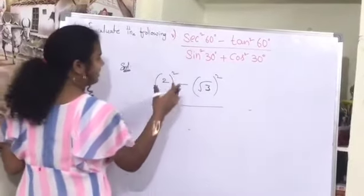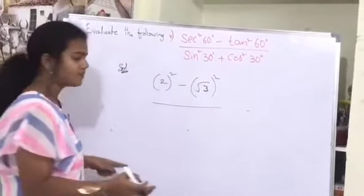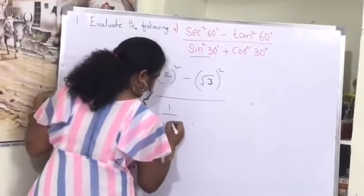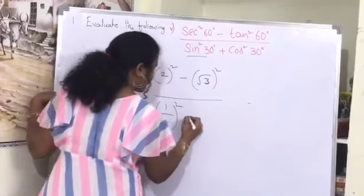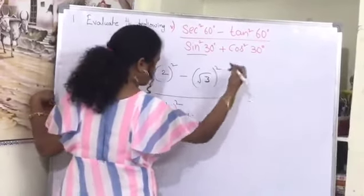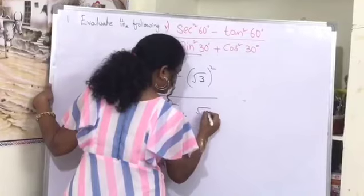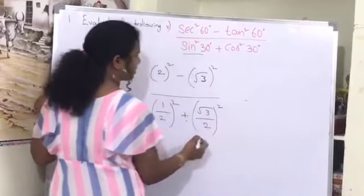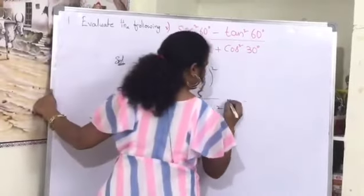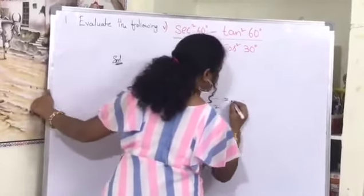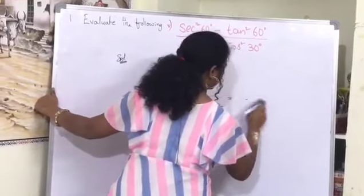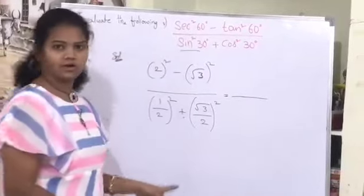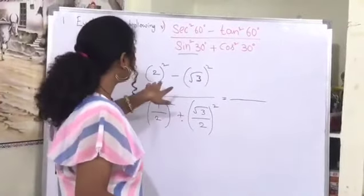This is divided by sin squared 30 degree, where sin 30 equals 1 by 2, whole squared, plus cos squared 30 degree, where cos 30 equals root 3 by 2, whole squared.